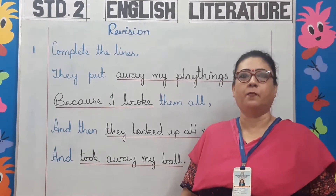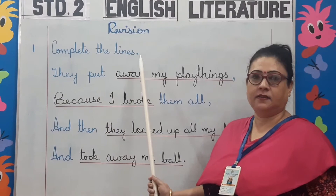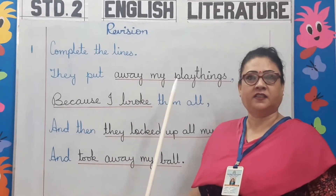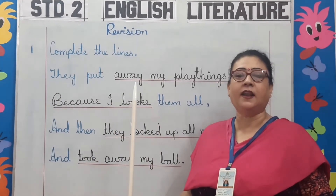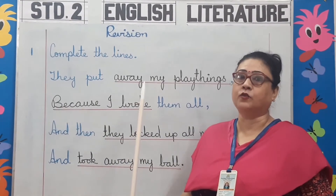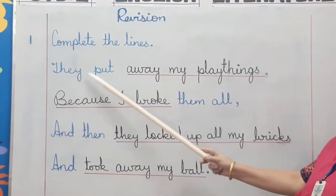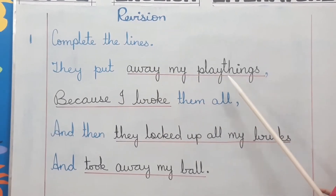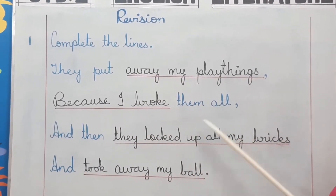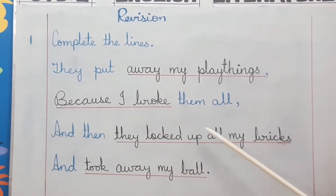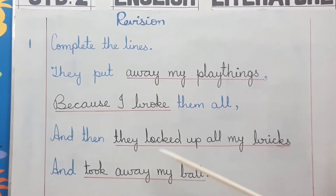Topic number one: complete the lines. In this exercise, you have to complete the lines according to the poem. They put away my playthings because I broke them all, and then they locked up all my bricks and took away my ball.